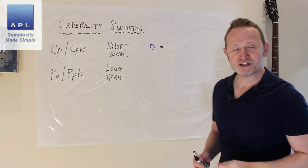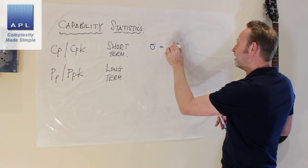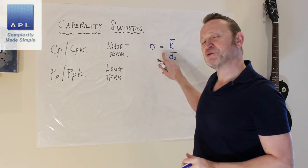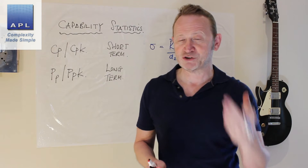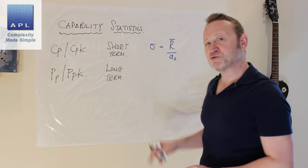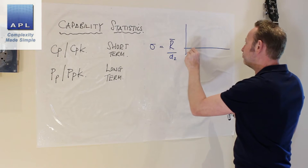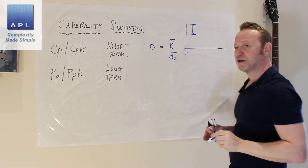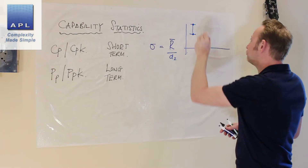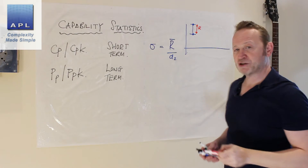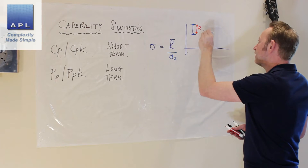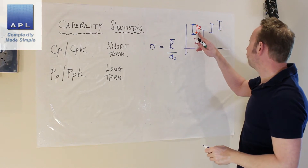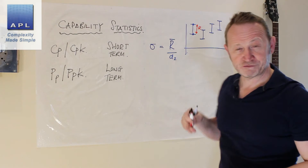Up here, the standard deviation — this is the Shewhart methodology, and he uses the technique R-bar over D2. What Shewhart is doing is trying to simplify the calculation of standard deviation in the days when there was no calculator and no computer. He's collecting a subgroup, and here's the range of that subgroup — the maximum value and the minimum value. He uses the range for each subgroup, averages the ranges across subgroups, and works out the average range — R-bar.